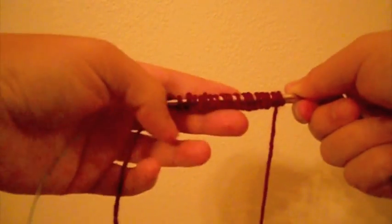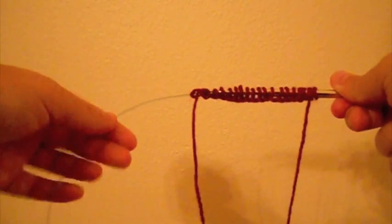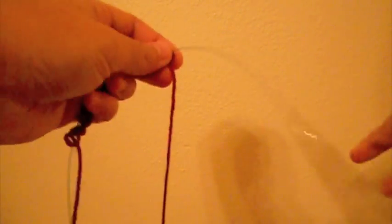Begin by casting on the number of stitches your project requires. Generally you should use an even number of stitches. For this tutorial I cast on 20 stitches.